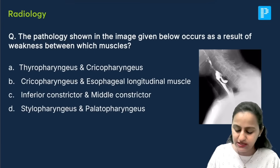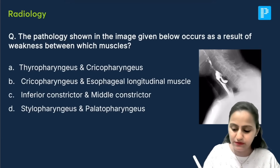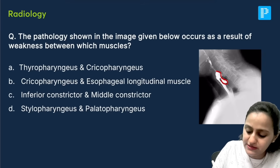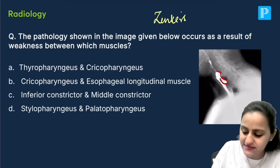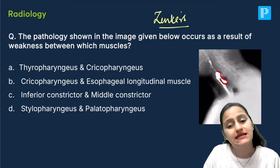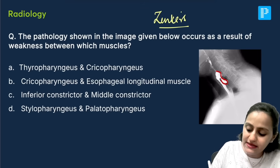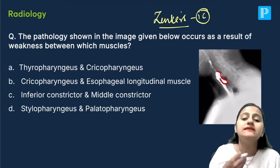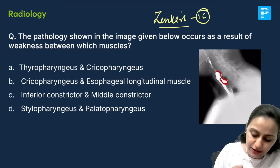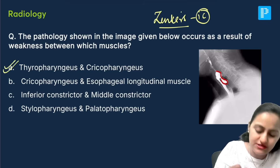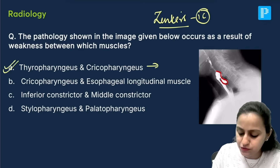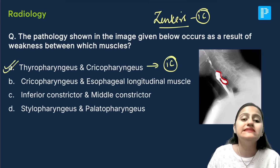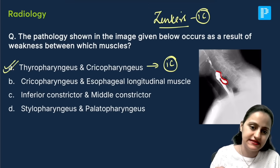The next question asks about the pathology occurring due to weakness between which muscles. This pathology is a diverticulum in the upper esophagus — Zenker's diverticulum, seen generally in elderly patients. It occurs in the inferior constrictor muscle, which has two parts: the cricopharyngeus and the thyropharyngeus, based on the cricoid and thyroid cartilage respectively. Zenker's diverticulum appears through Killian's dehiscence between these two parts of the inferior constrictor muscle.